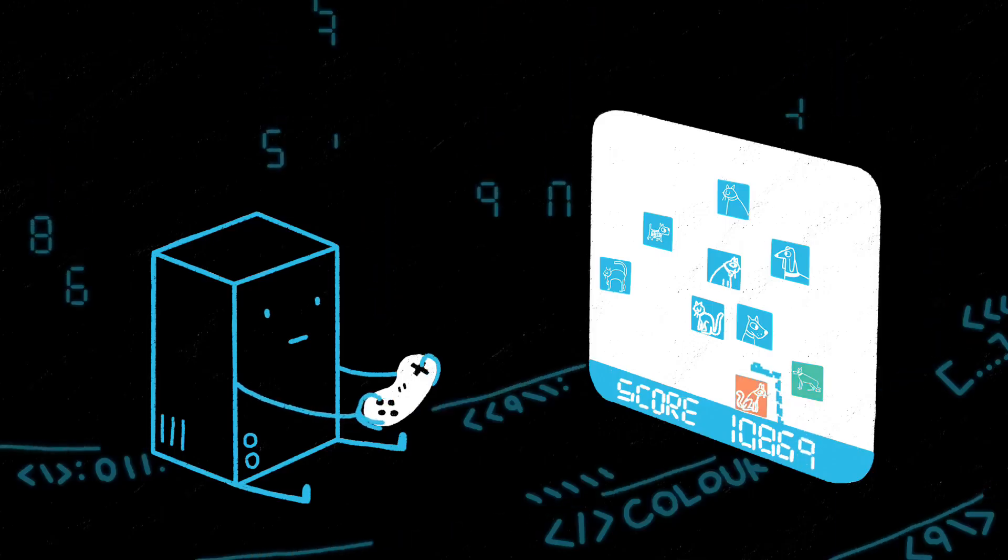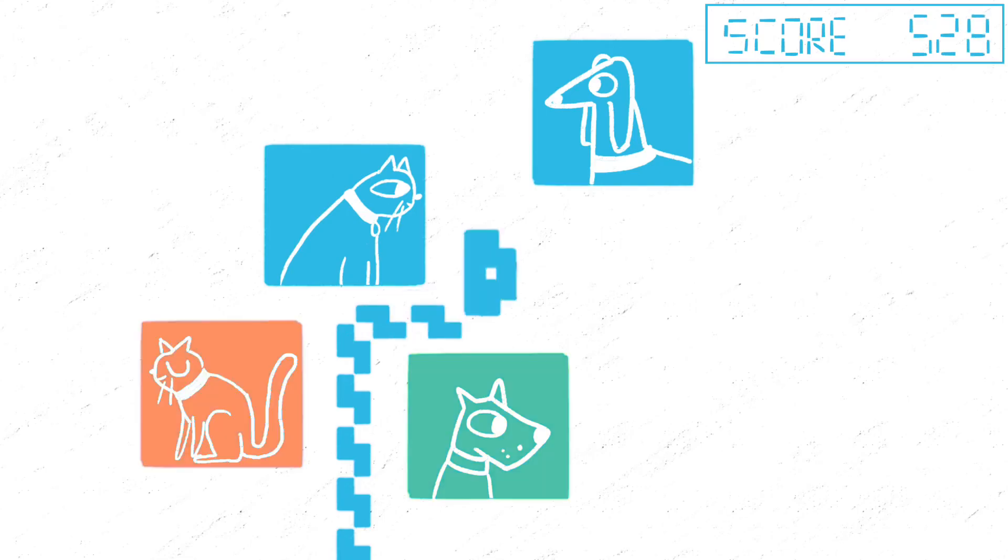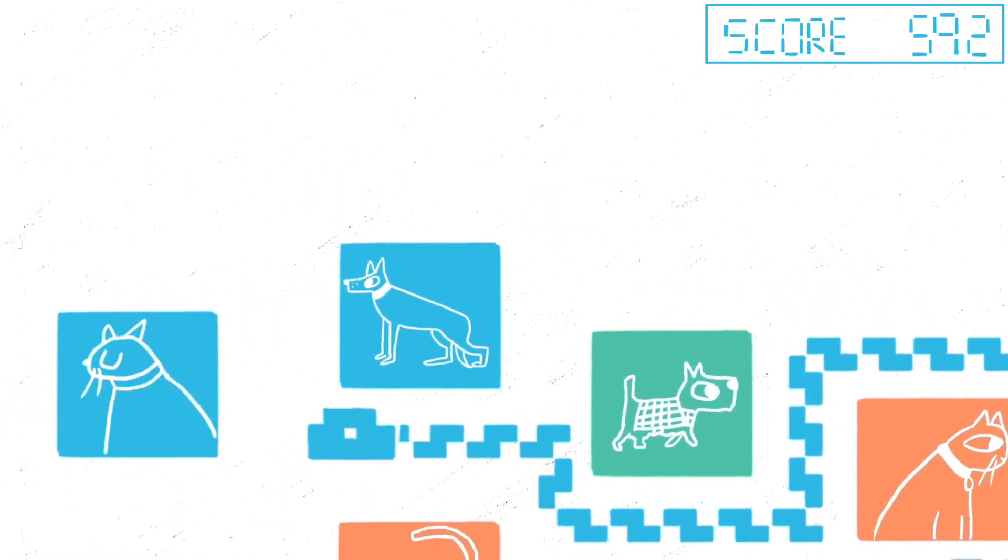One example of a simple, yet highly effective algorithm is to find the optimal line separating cats from dogs. When the computer sees a new picture, it checks which side of the line it falls on and then says either cat or dog.